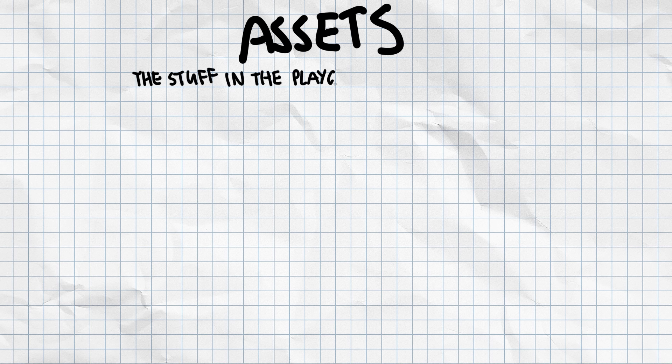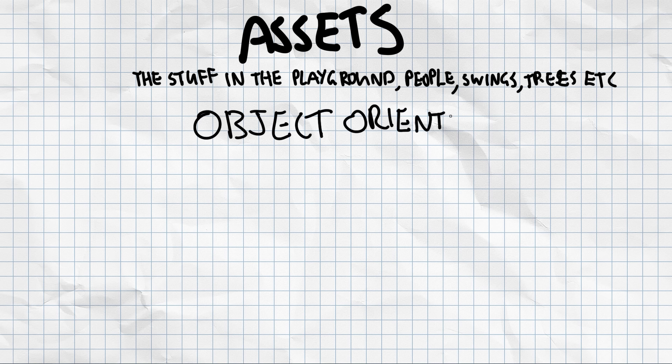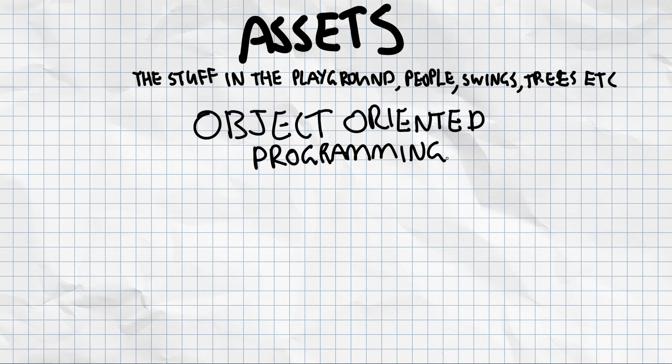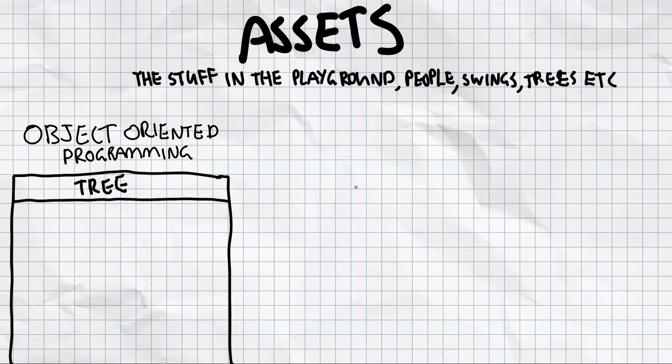And now on to the assets. So this is the stuff inside the playground. And this can be anything. This can be the people, the swing sets, the play equipment, the trees, the bits of rocks and grass on the ground. Literally anything. And the reason why it can be anything is because most game engines use a thing called object oriented programming. And although that might sound a little bit sort of techie and confusing, it's super, super simple. And the reason it's super simple is because everything just starts off as the exact same thing.